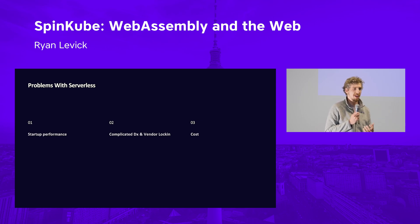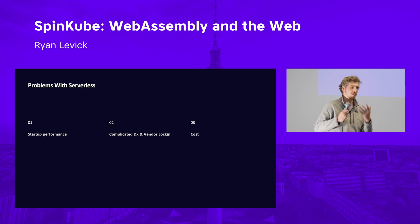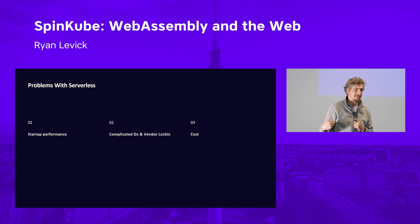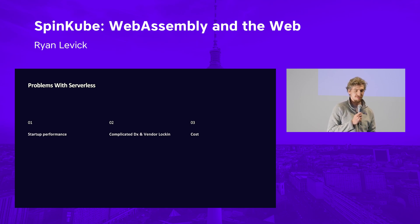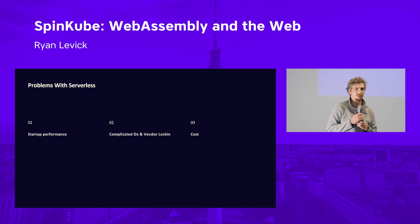Serverless is also almost always locked into a specific vendor. You pick Amazon, you're stuck writing Lambda apps. Then your boss says you're moving to Azure and you have to rewrite everything, because it's all targeted towards a proprietary serverless vendor solution. And it's really expensive to run — I worked at Microsoft and talked to the Azure Functions team. They do a lot of work to reduce cost, but most of it still gets passed on to us.